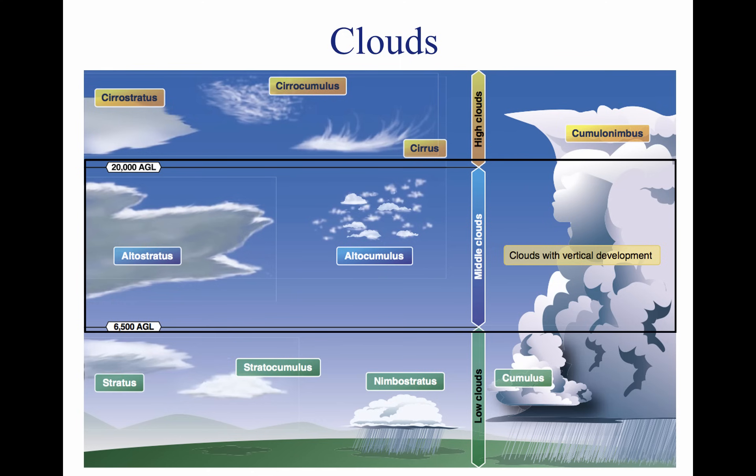Altostratus clouds can produce turbulence and may contain moderate icing. Altocumulus clouds, which usually form when altostratus clouds are breaking apart, also may contain light turbulence and icing.